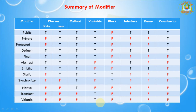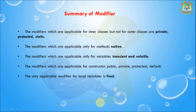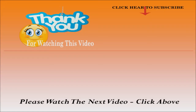Finally, closing this session with a summary: the modifiers applicable for inner classes but not outer classes are private, protected, and static. The modifiers applicable only for methods include native. The modifiers applicable only for variables are transient and volatile. The modifiers applicable for constructors are public, private, protected, and default. The only applicable modifier for local variables is final. Thank you so much for watching this video. I hope this lesson was helpful. Keep watching our lessons and do not forget to subscribe to Sadaar Learning Hub, as we have many sessions to help develop your skills. I will be back soon — take care, bye bye.